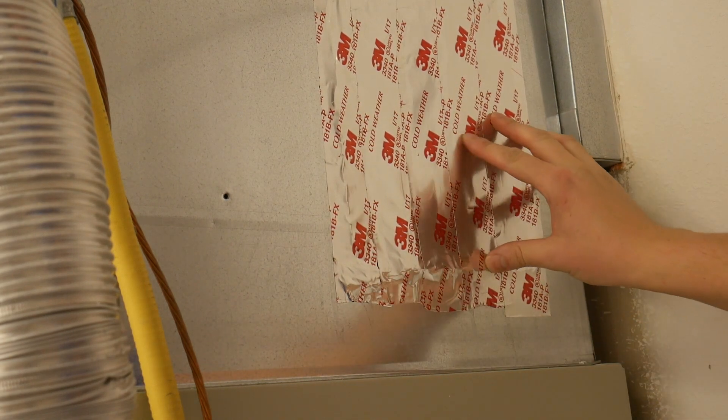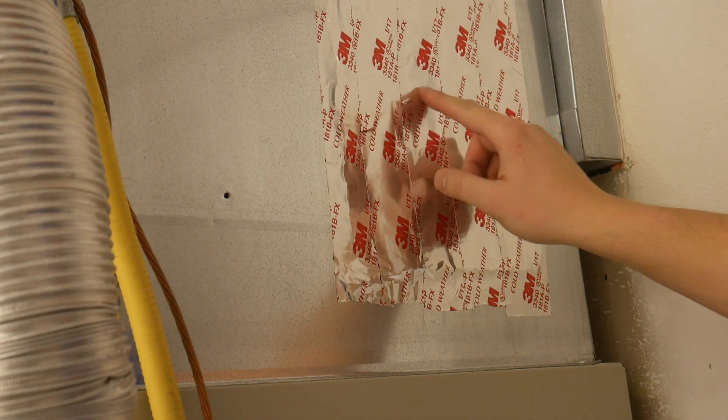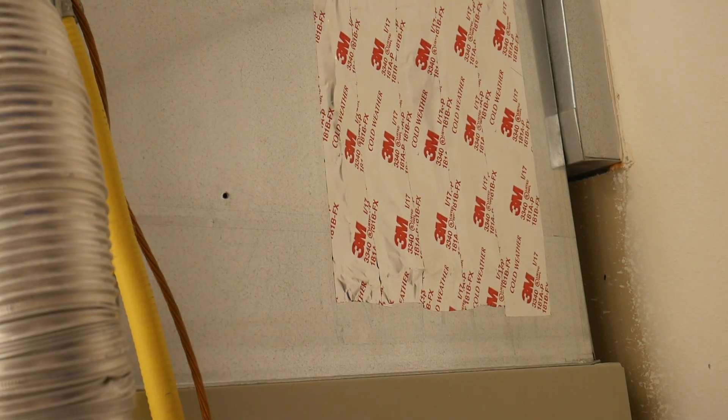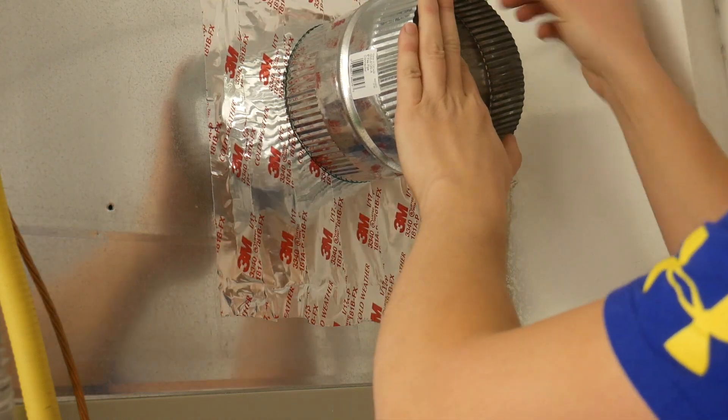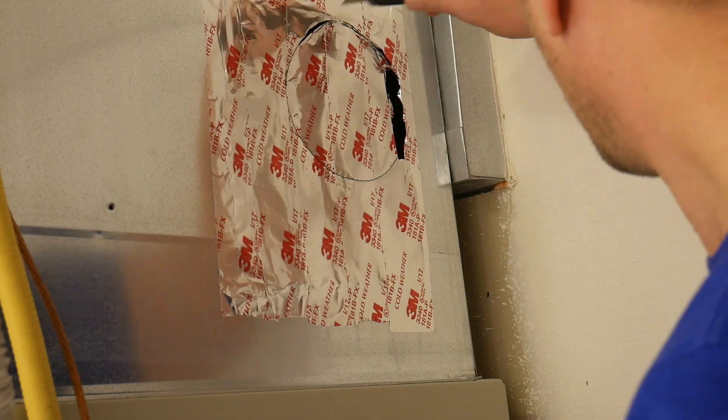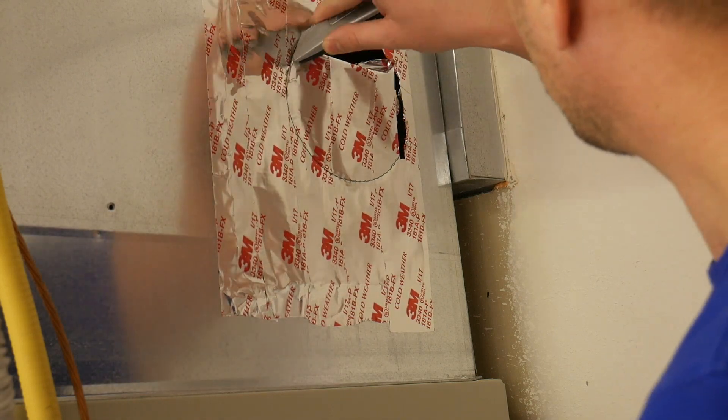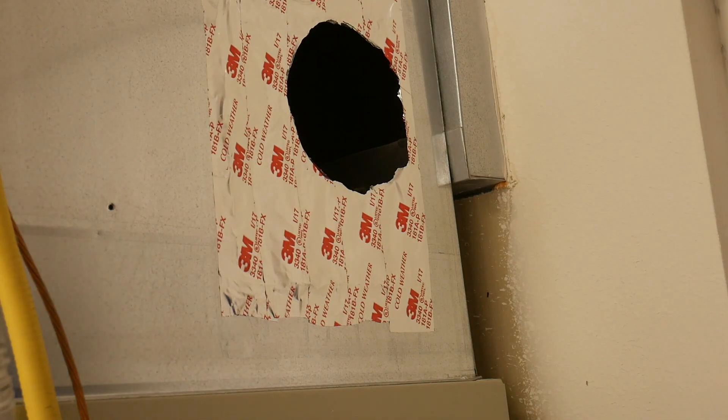Right here I'm gonna cut a six inch hole that will be used for the duct that will go back into the return. So this is the old hole where the Honeywell was placed.